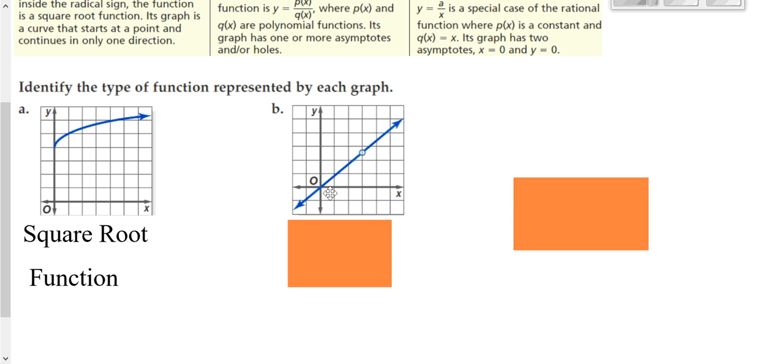Here, this is a special line going through the origin, and it has a slope of one. So you might be thinking identity, but it's not. We have a hole here. Whenever you have a hole, no matter what it is, it's always a rational function.